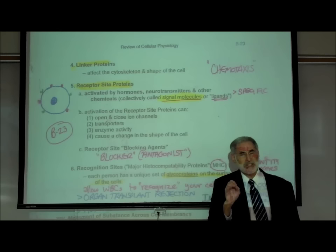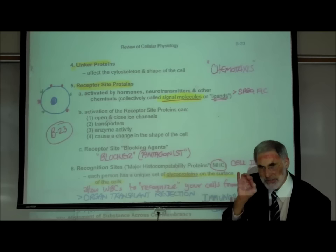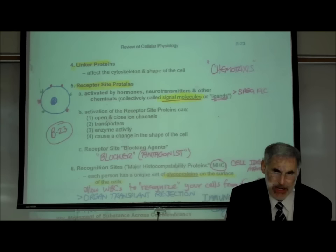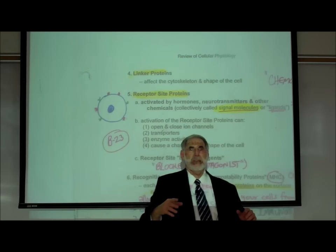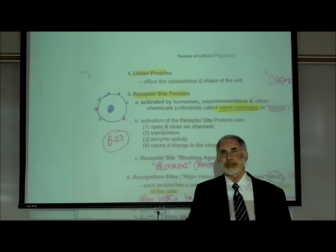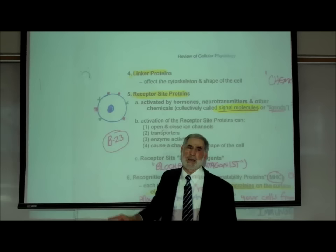These receptor site proteins exhibit specificity, meaning that only a specific type of chemical — a specific hormone or a specific neurotransmitter — can attach and activate that particular receptor site protein. On any given cell, there might be no receptor sites, a receptor site for just one type of hormone or neurotransmitter, or many different receptor sites for different hormones and neurotransmitters.